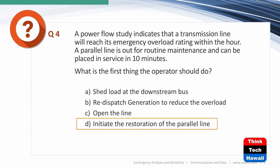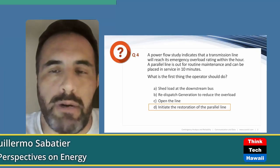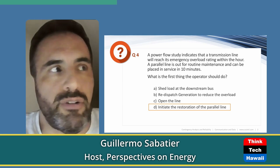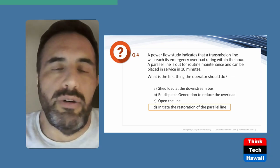Redispatching generation happens often in utilities that own both generation and transmission, but the question gives you no information about generator locations or which to ramp up or down — so B isn't an adequate answer here. The worst thing you could do is open the line — if you open it, that power is still flowing and it forces more power elsewhere, likely causing a worse problem. You're already down one line; removing another further aggravates the overload.